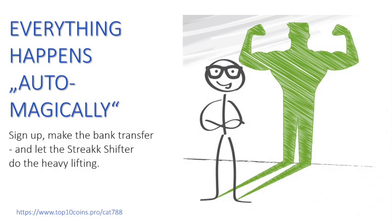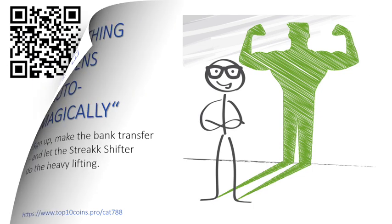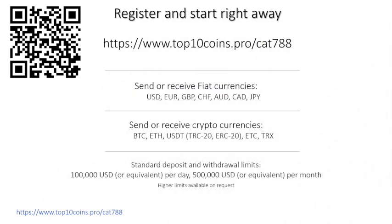What do you have to do? You only need to register once with our Streak Shifter. Select the cryptocurrency and enter the destination wallet address or your bank account details. And of course, you still need to make the bank transfer or send the cryptocurrencies. The rest will happen automatically. The limits are initially set at 100,000 USD per day and a maximum of 500,000 USD per month. If this is not adequate for you, please contact us and we can increase the limits.